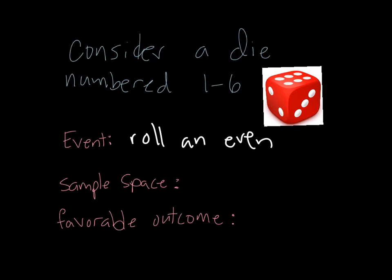The sample space for rolling a dice would be 1, 2, 3, 4, 5, 6. These are all of the possible outcomes of when I roll this die. These are the only things that can happen, and it's everything that could happen.